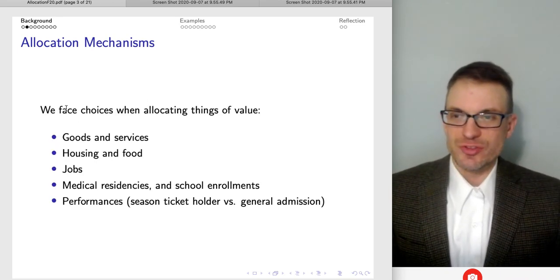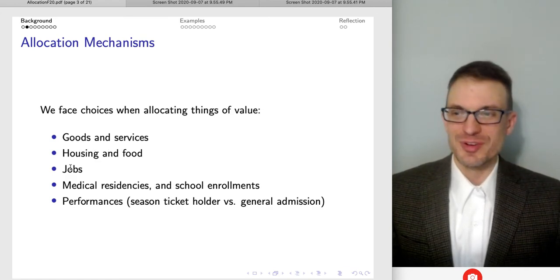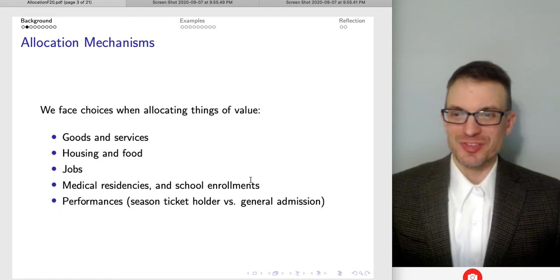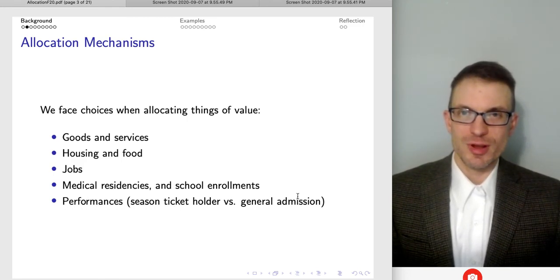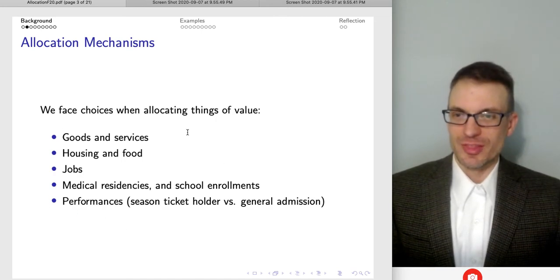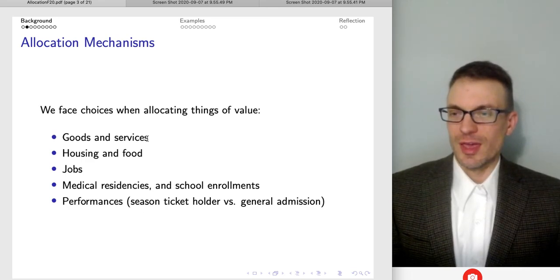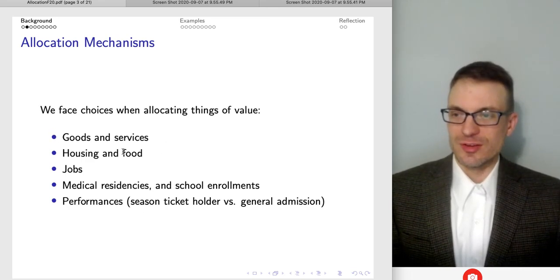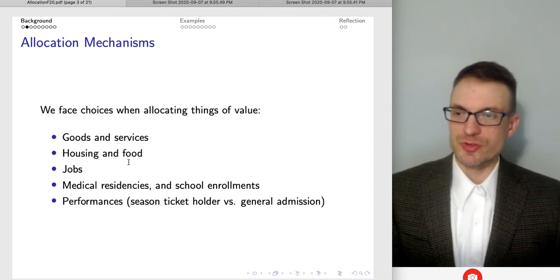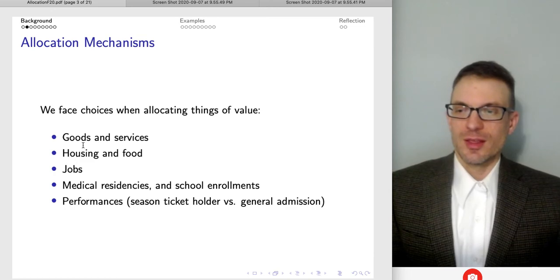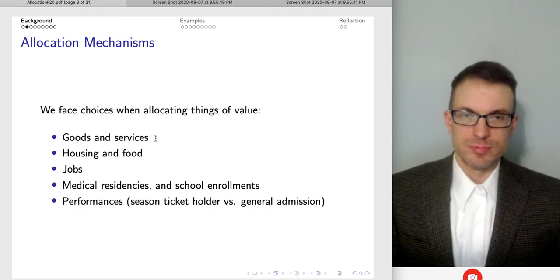So we face choices when allocating things of value. Goods and services, houses and food, jobs, medical residency, school enrollments, performances, such as season ticket holder versus general admission. We've got a lot of different things that are of value and we've got to determine who is going to be able to consume these things. And with each of these, there's kind of different levels of necessity and scarcity is entering in different sorts of ways. That's relevant for how we think about how allocation of these things ought to go.